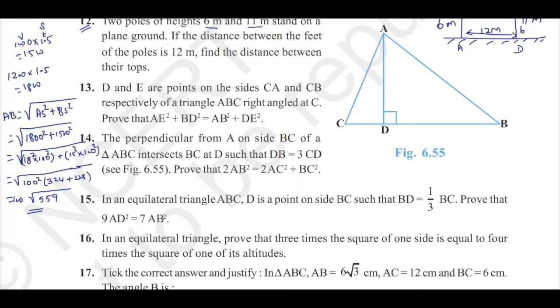Now question number 13. D and E are points on side CA and CB of triangle ABC right angled at C. First let us draw a right angle triangle. A, B and C. D and E are points on side CA and CB. CA it is D, CB it is E. Let us connect this.